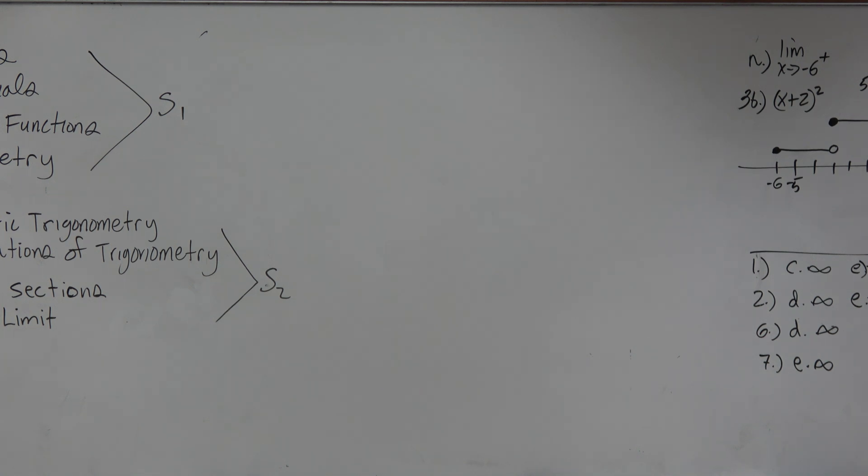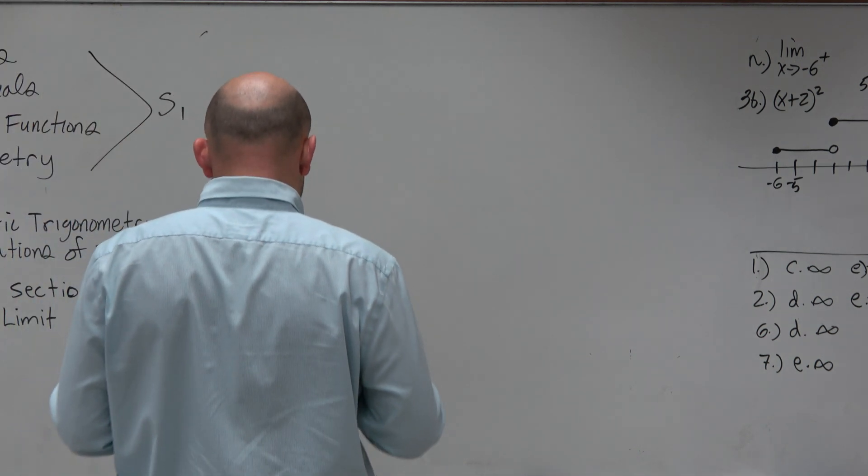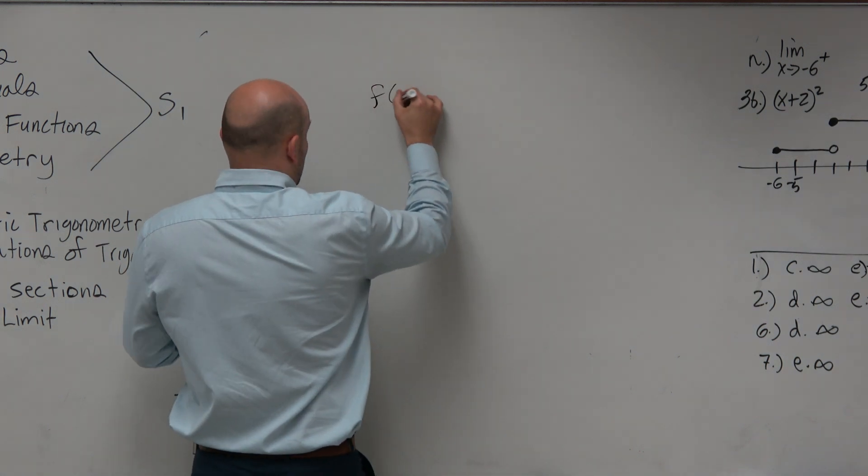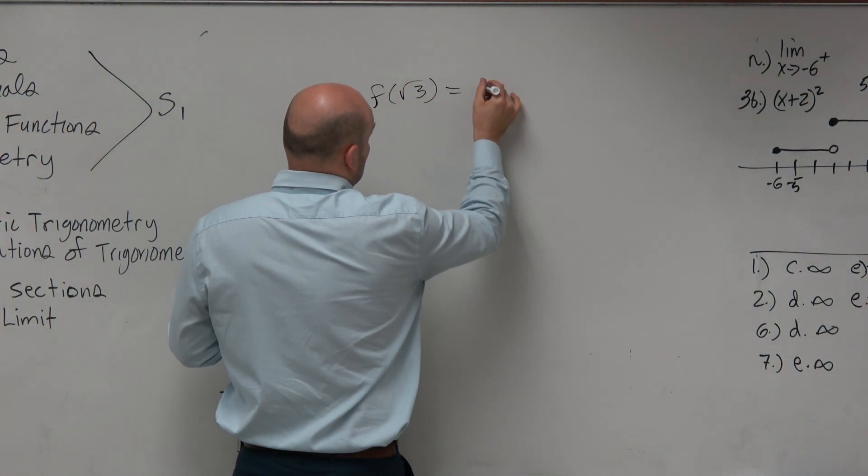So looking at number 19. Number 19 tells us something that's kind of interesting. It says f of square root of 3 is equal to 0.